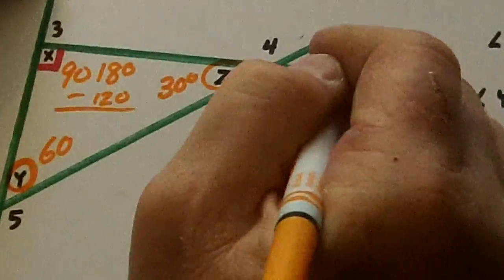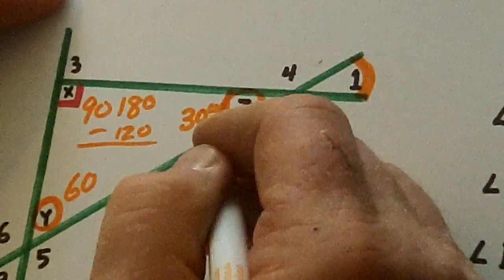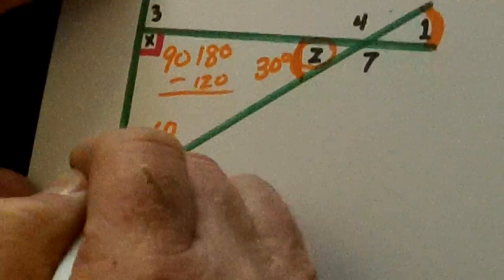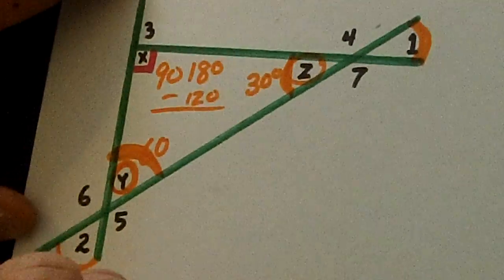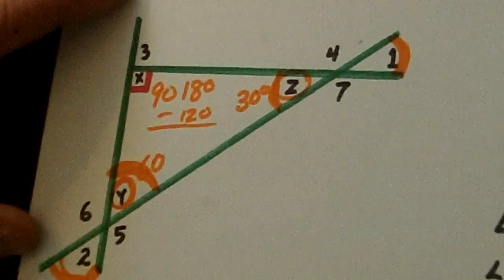Well look here. One is vertical to Z. So Z is 30, one is 30. Look here. Y is vertical to two. Y is 60, two is 60.